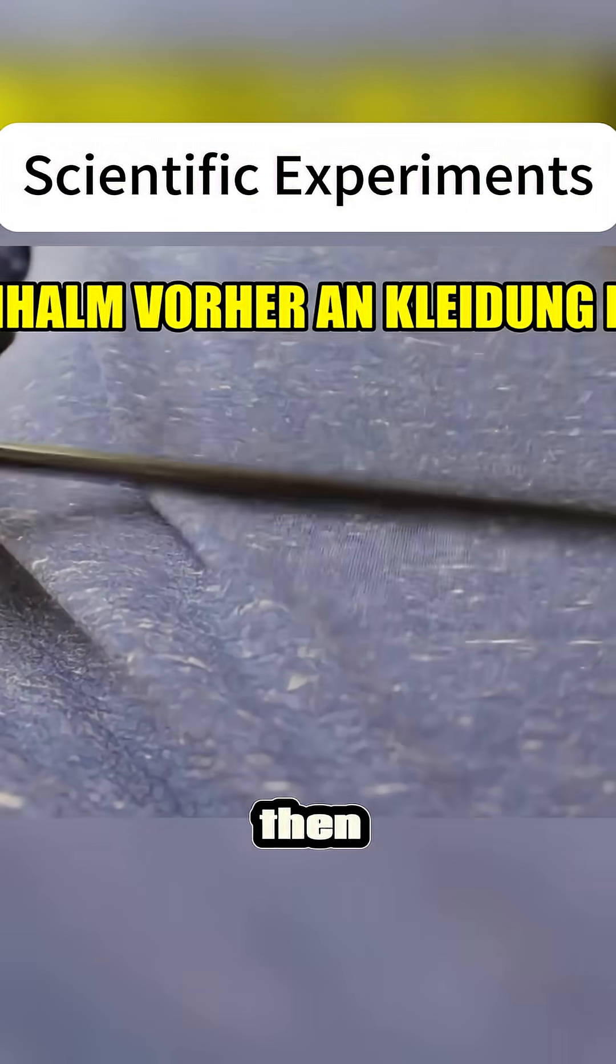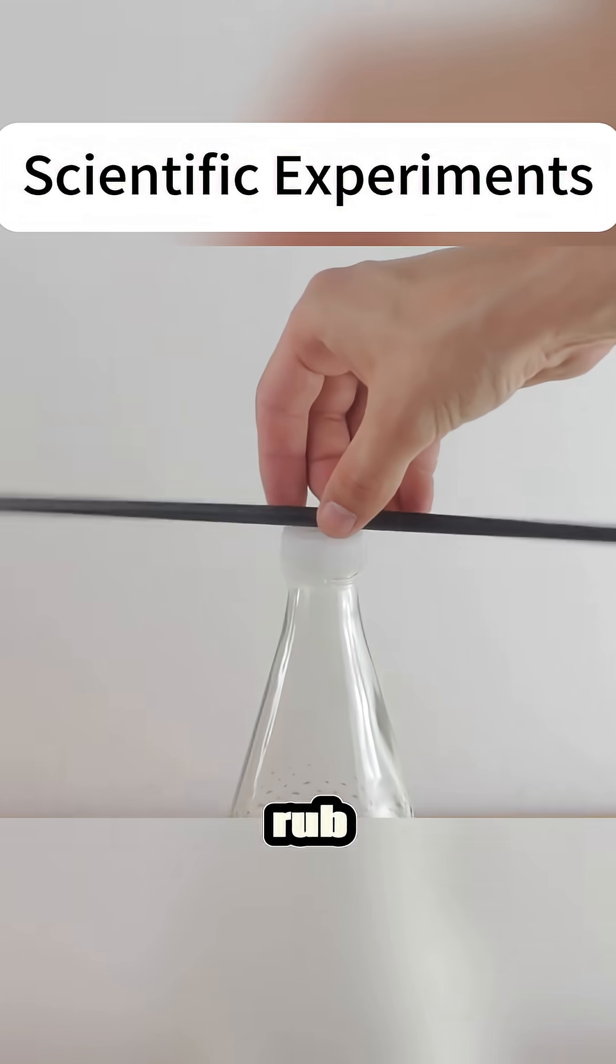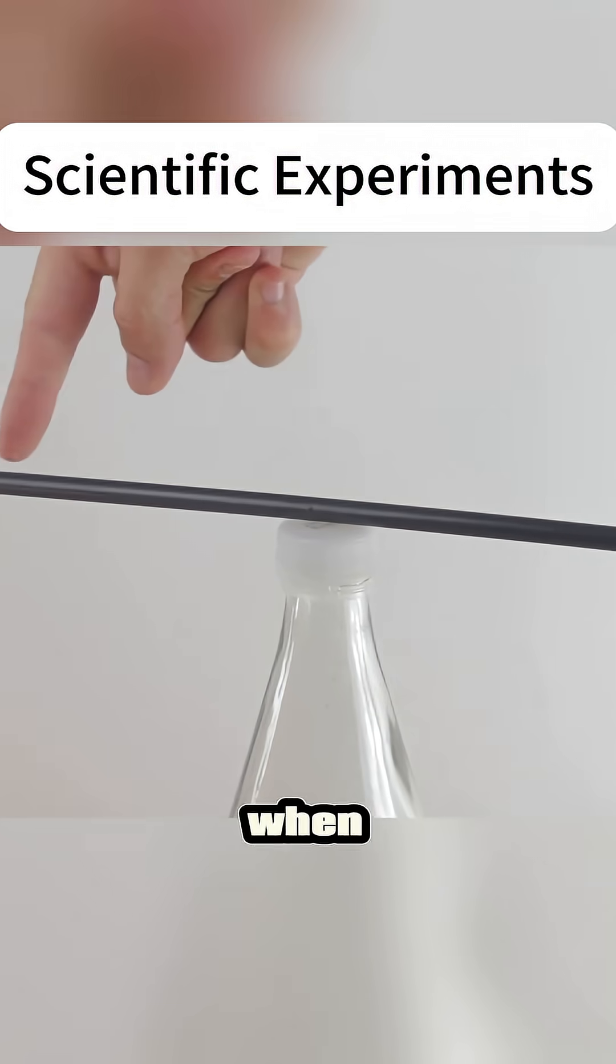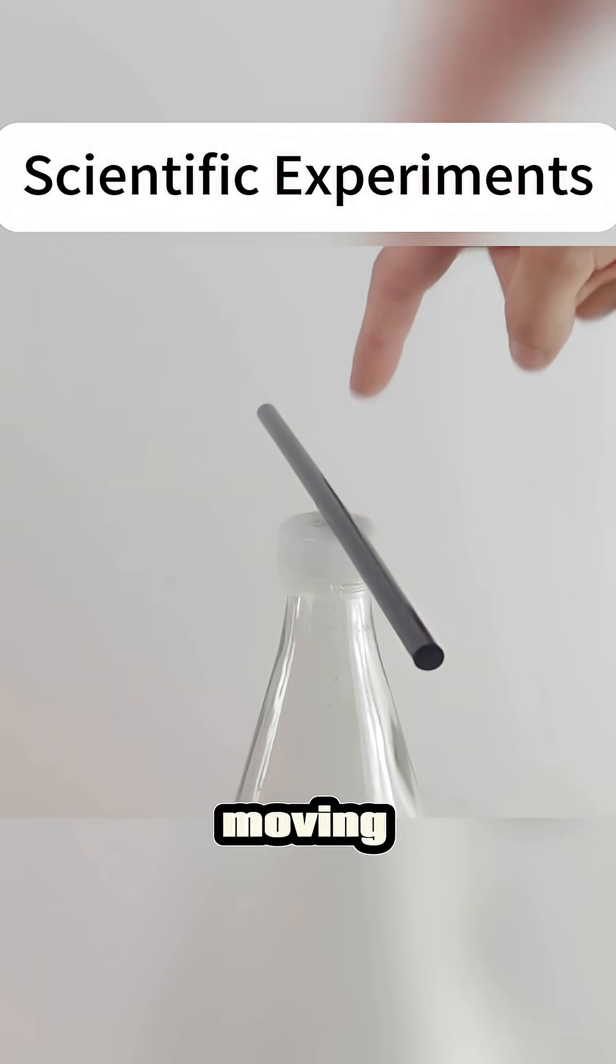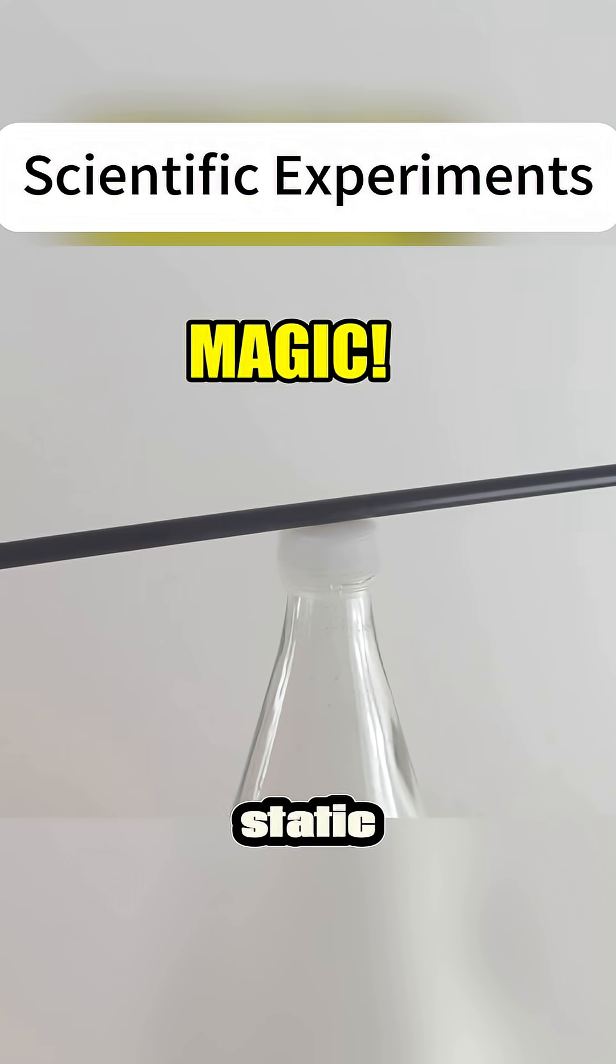Place a glass bottle on a table, then rub a straw on your clothes. Place the rubbed straw on top of the glass bottle. When you try to touch the straw with your hand, the straw starts moving without any contact. This is static electricity.